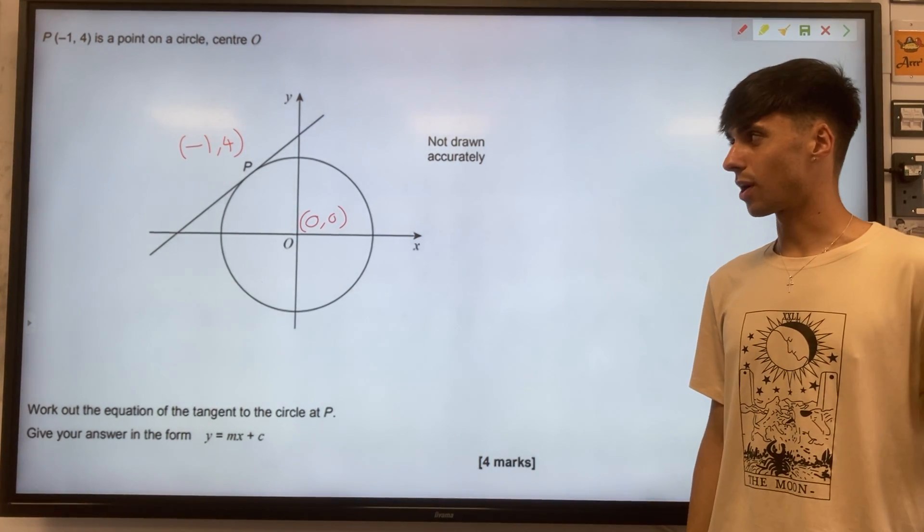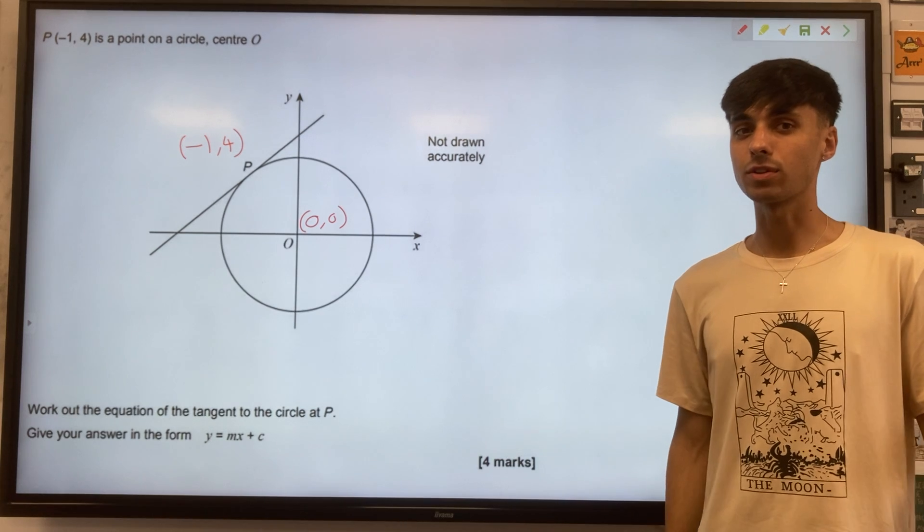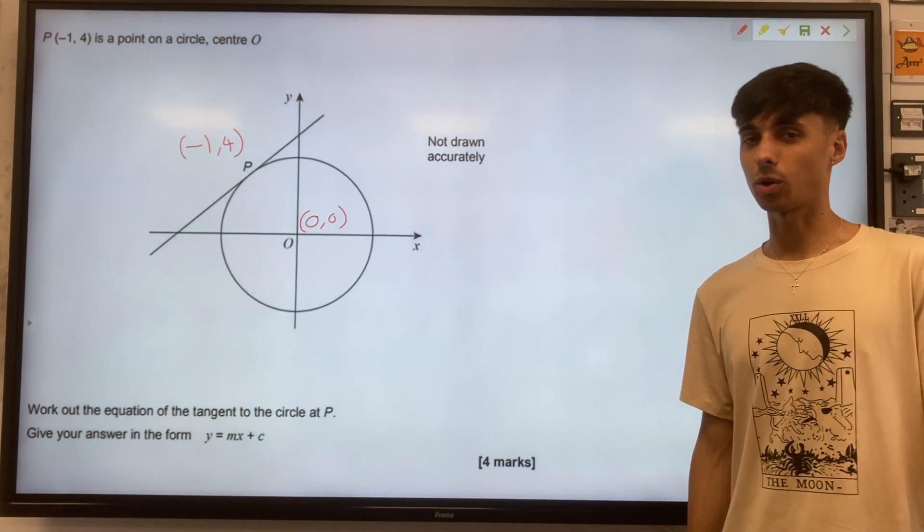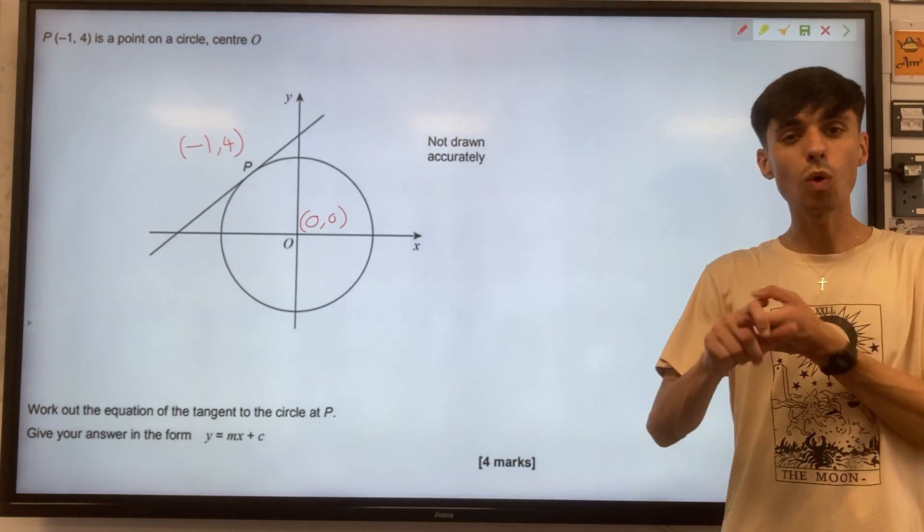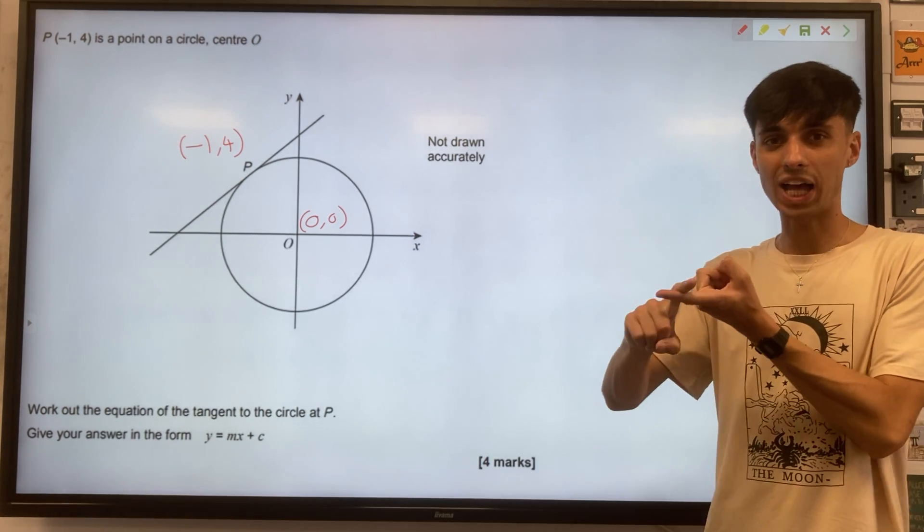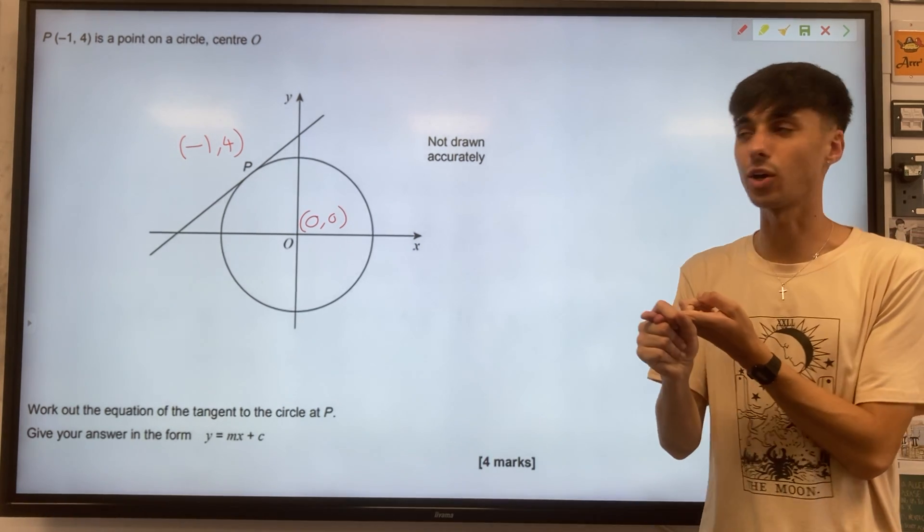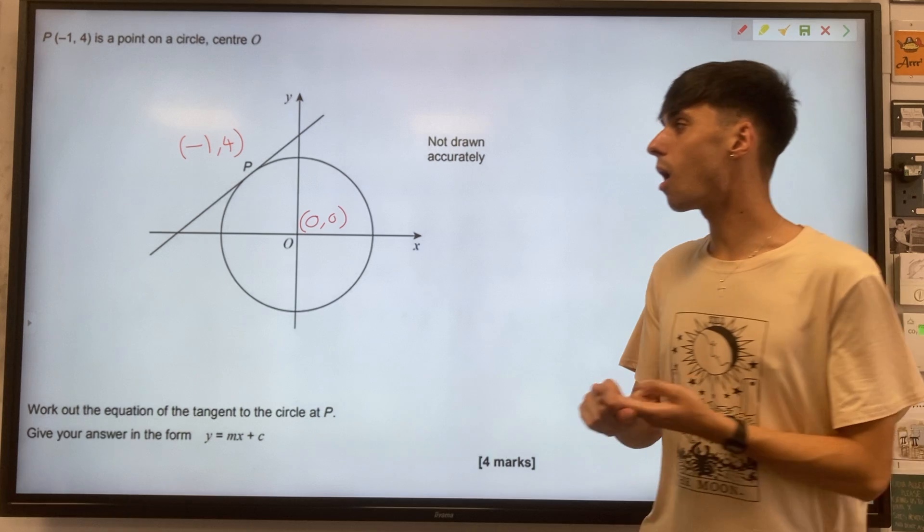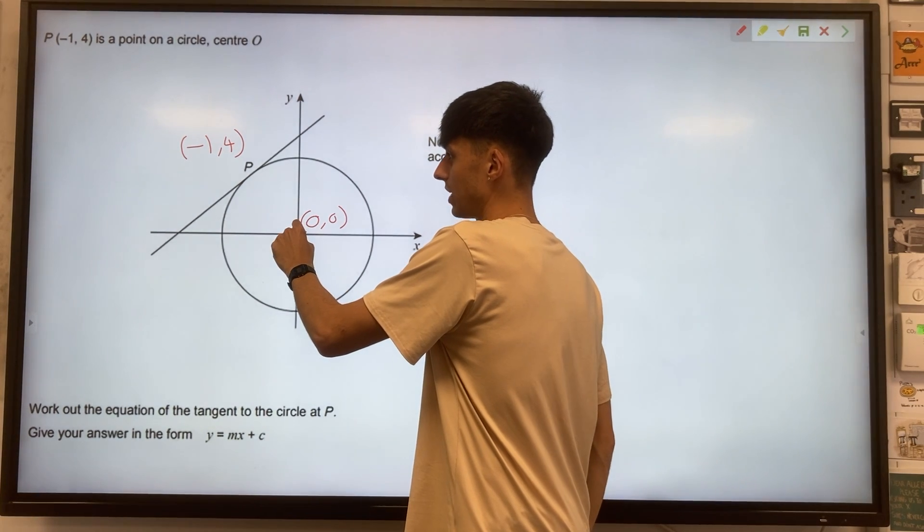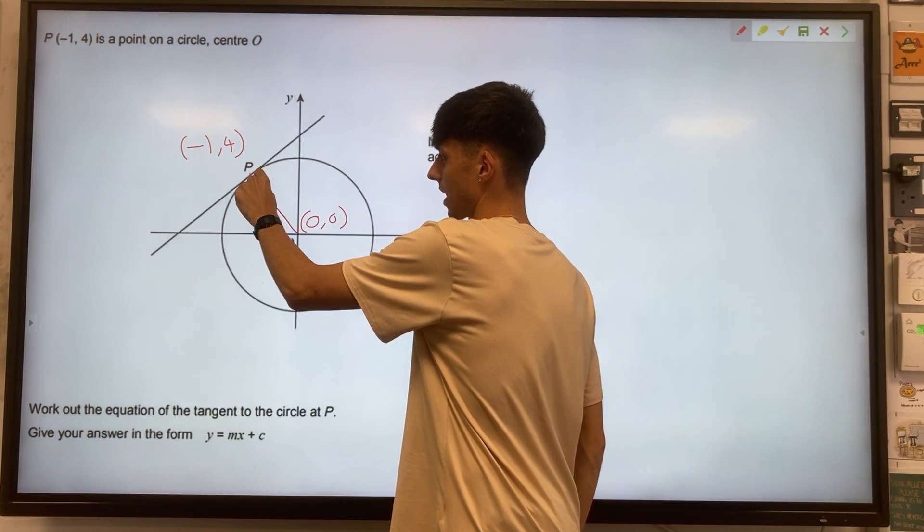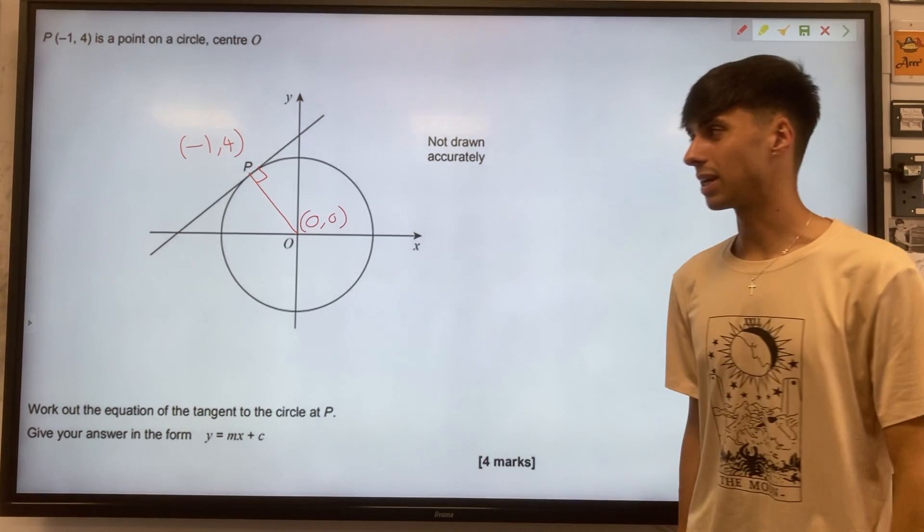Straight away, when you see this question, you should be thinking about a relevant circle theorem that's going to help us. And the one we're going to use is tangent meets radius at 90 degrees. So let's mark on there a radius meeting this tangent, and let's make it 90 degrees.